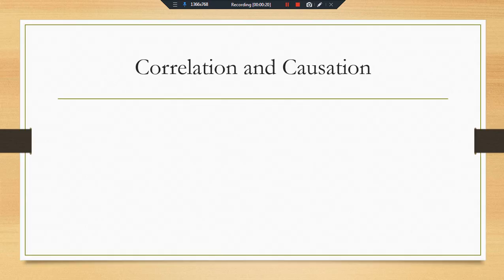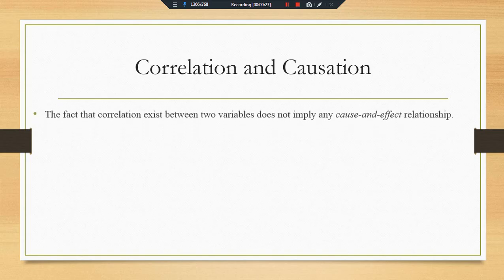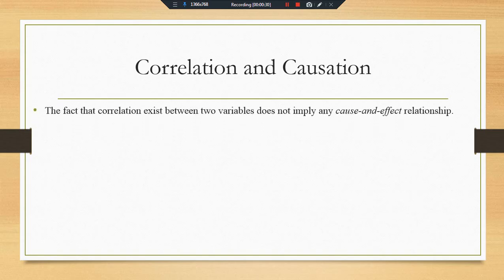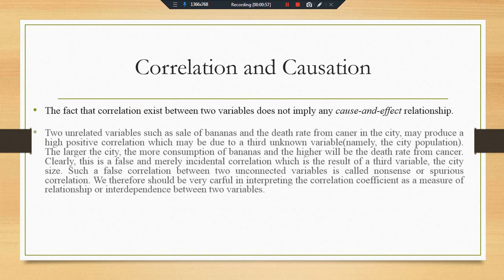We start with correlation and causation. Here we have made the distinction between the correlation and causation. Keep in mind that correlation between two variables does not imply that there is any cause and effect relationship between the variables. Cause and effect is a different type of relationship which we cover in another video.